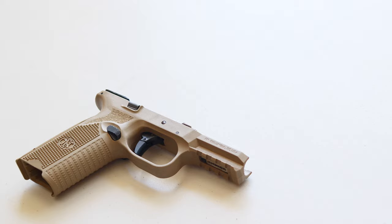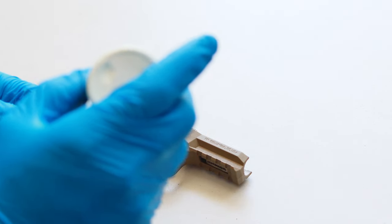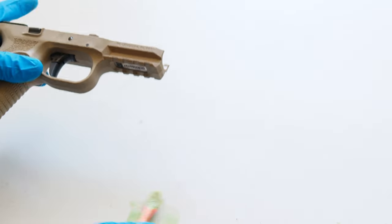You don't need to do this in any particular order, but I'm going to start with the frame today. Add CLP to your nylon brush and start going through it. Scrub all the inner and outer surfaces, everything you can see.